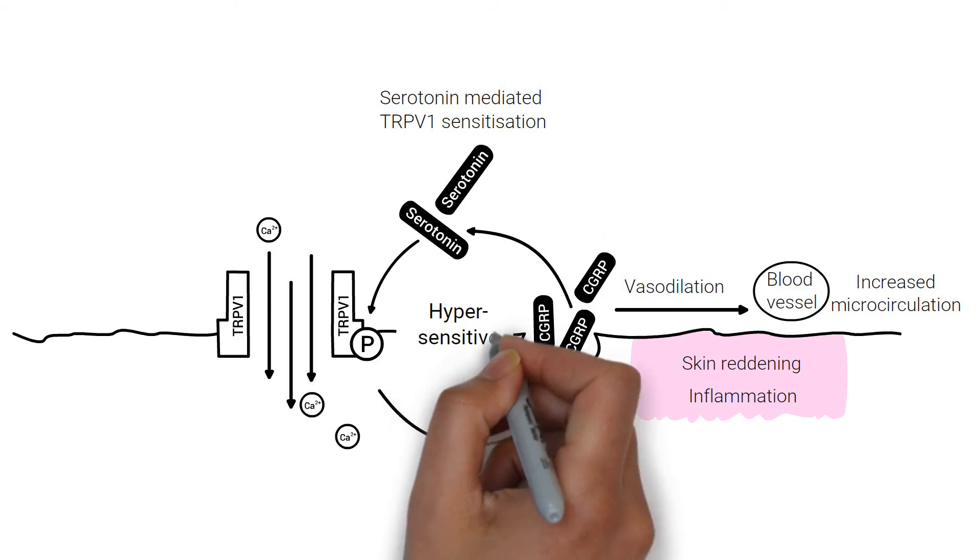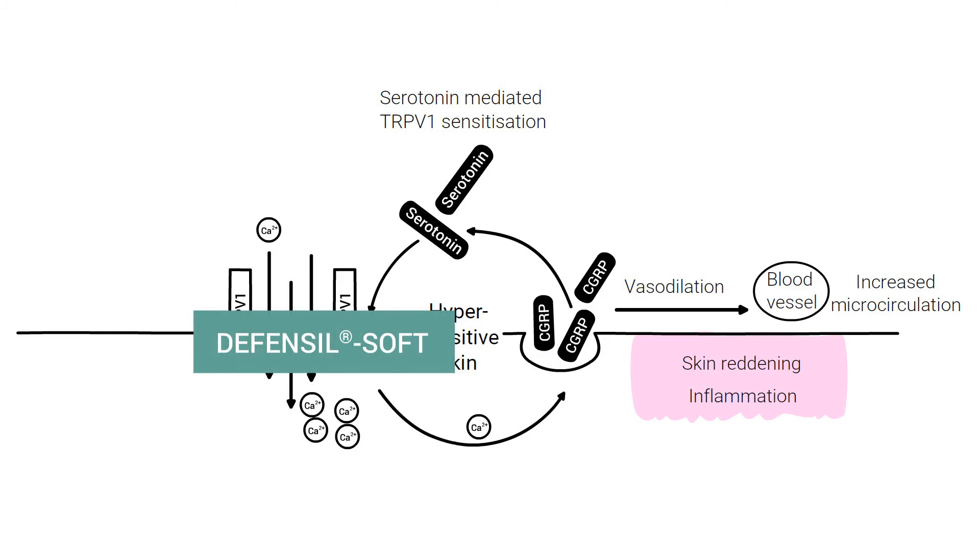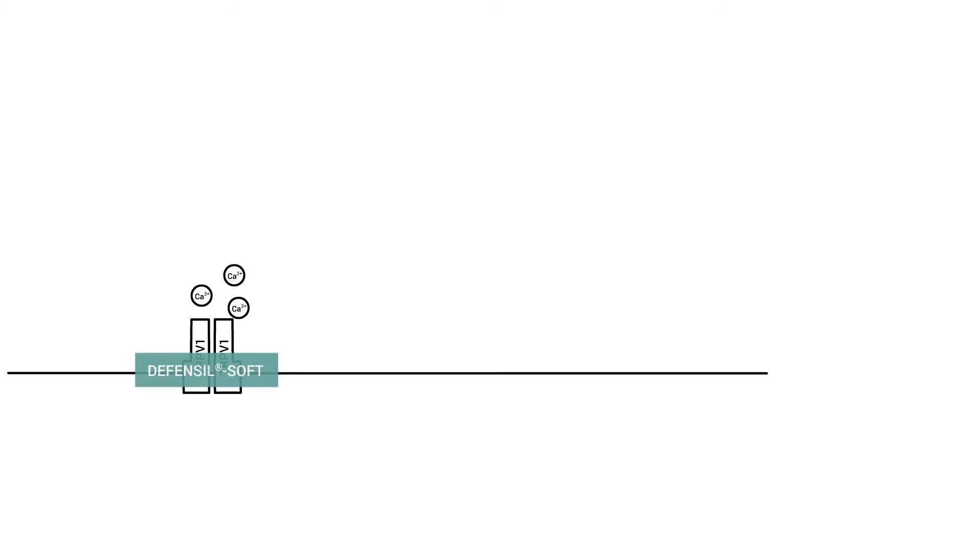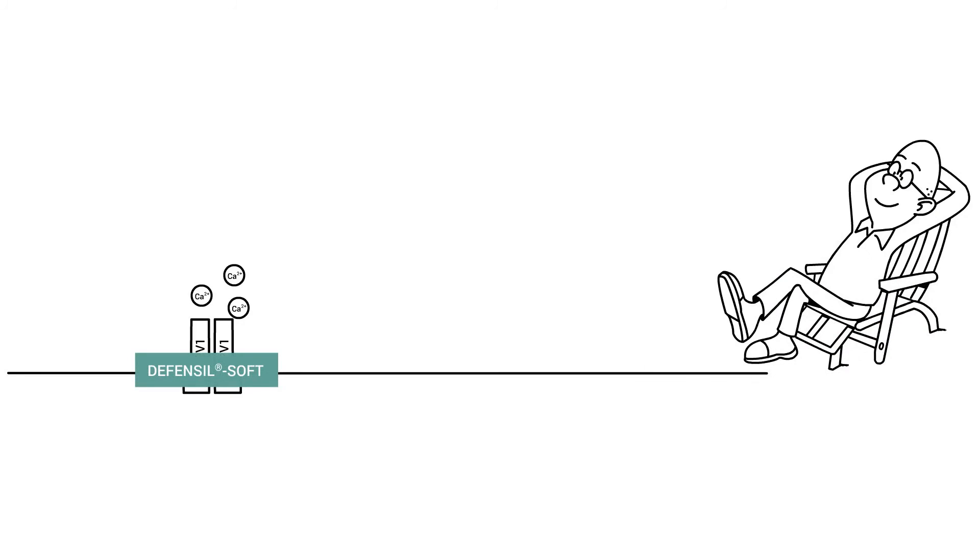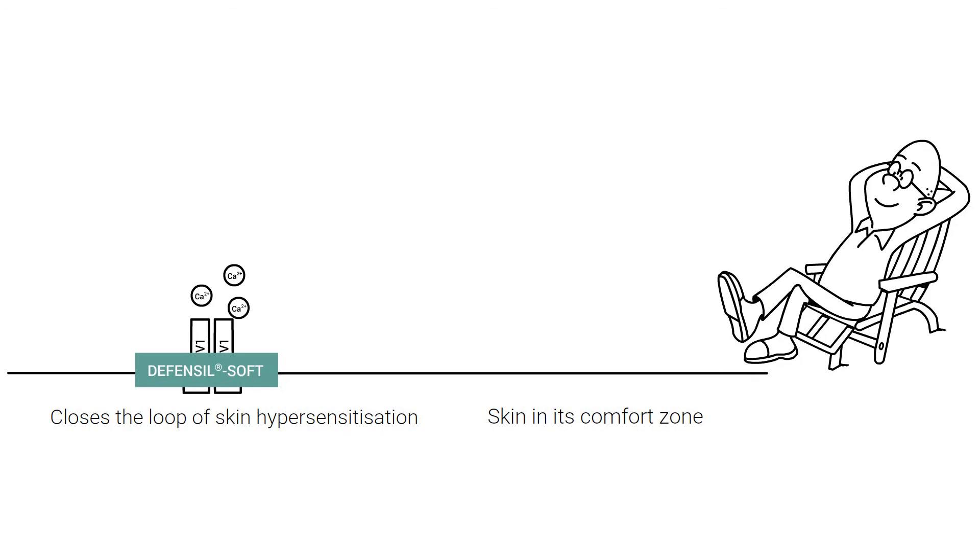The grifalin derivatives in Defensil Soft tackle the root causes of irritated skin. They efficiently block the TRPV1 receptors as well as serotonin receptors and close the loop of skin hypersensitization. The skin returns to its comfort zone within minutes.